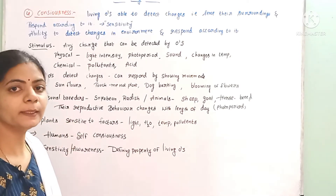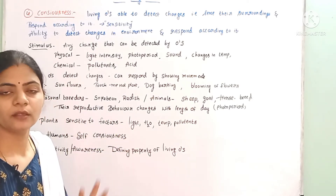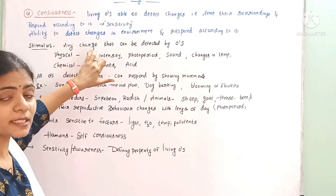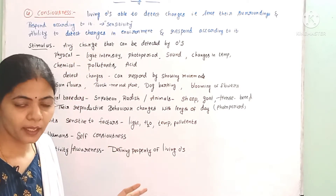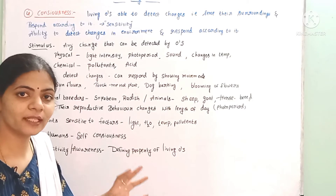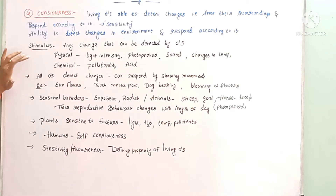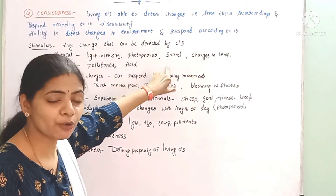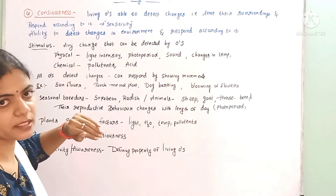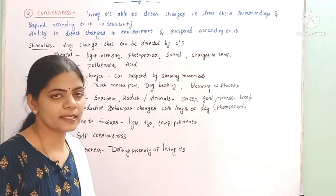The changes that can be detected by living organisms are called stimuli, and the body of the living organism shows a response according to those stimuli. There are different types of stimuli: physical stimuli such as light intensity, photoperiod, and changes in temperature, and chemical stimuli such as pollutants and acids.